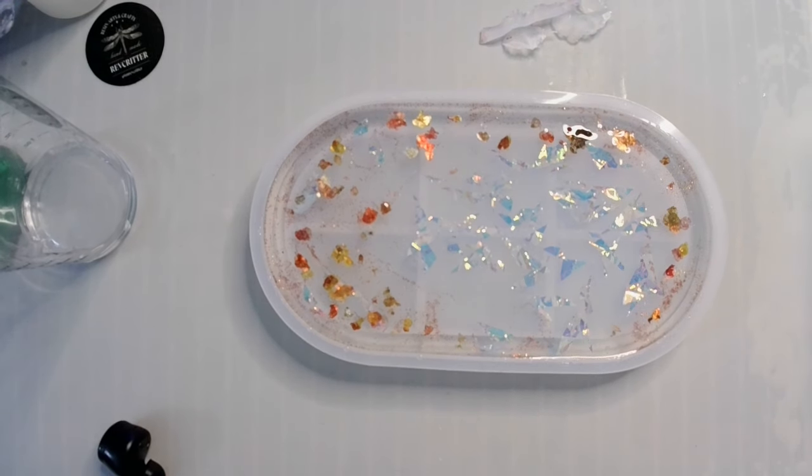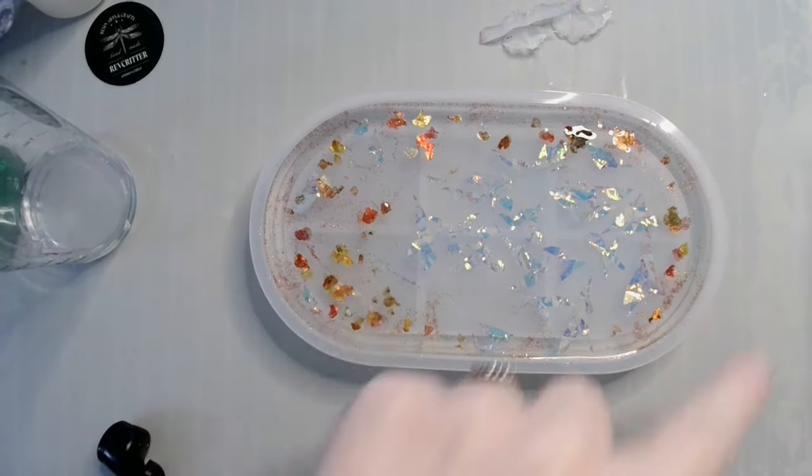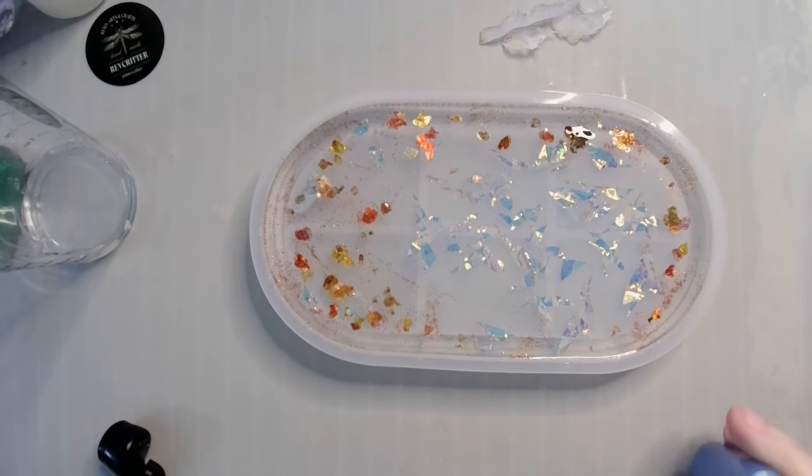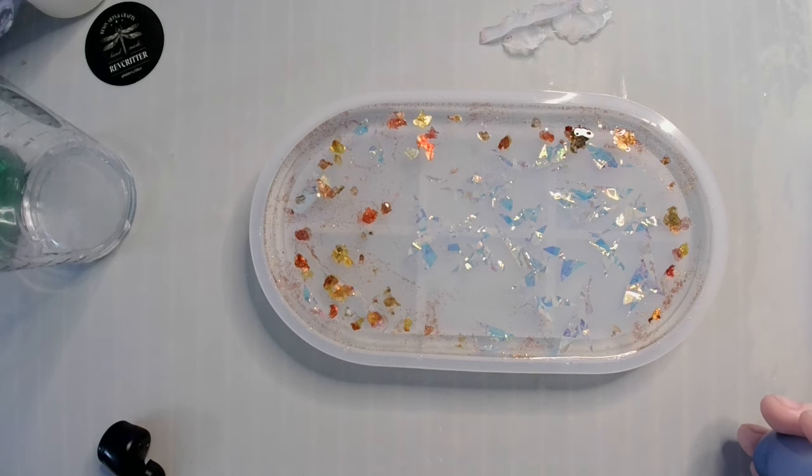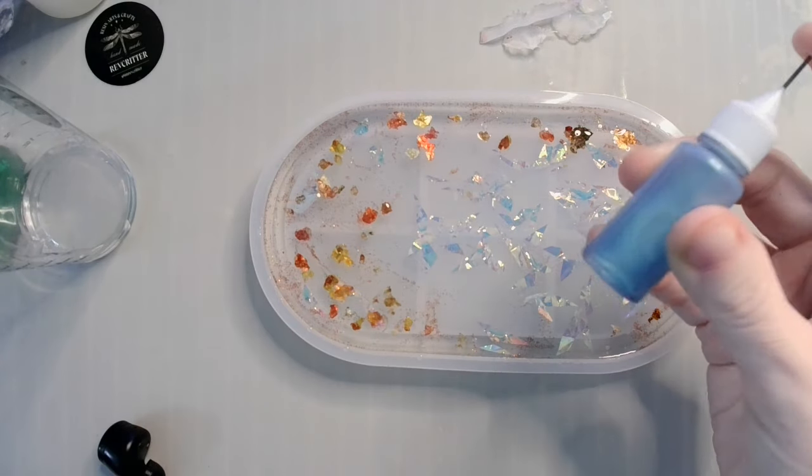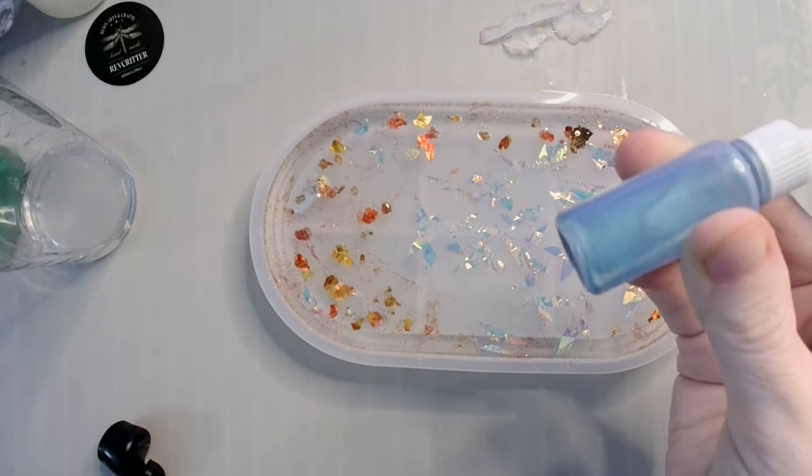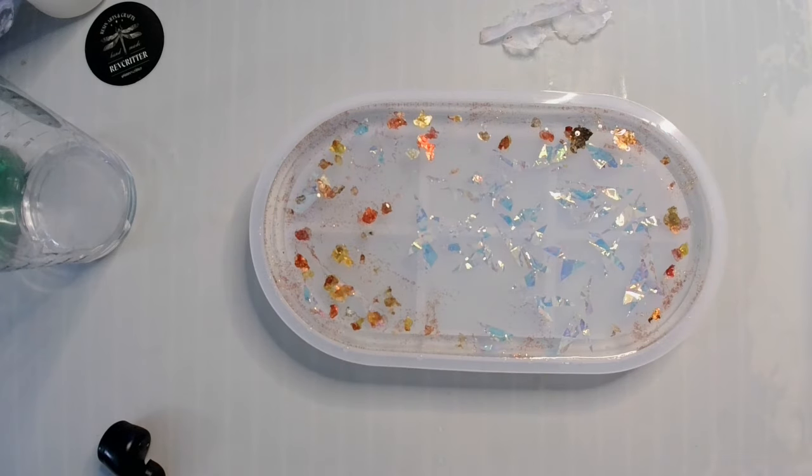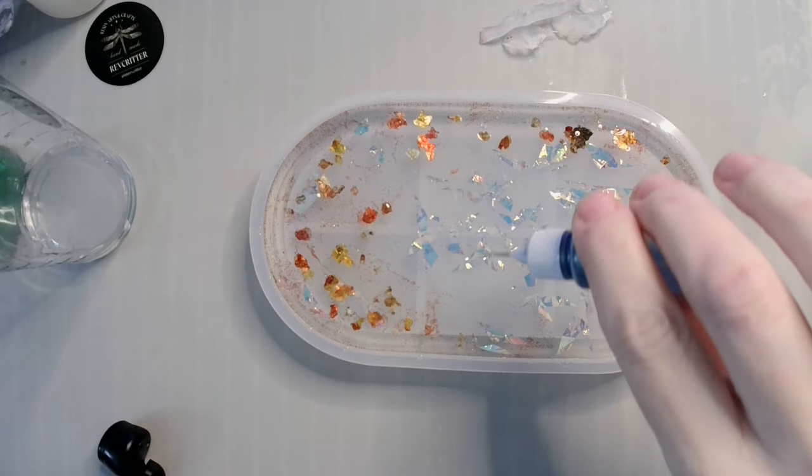Yep, forgot to hit record again. So I added in some of the orange, gold, yellow mica flakes that I was sent from Miss Lisa Crowe. I put those around the perimeter, and then around the blue parts I'm gonna add some of my Snow Queen Blue alcohol ink that I made, just in the middle here.